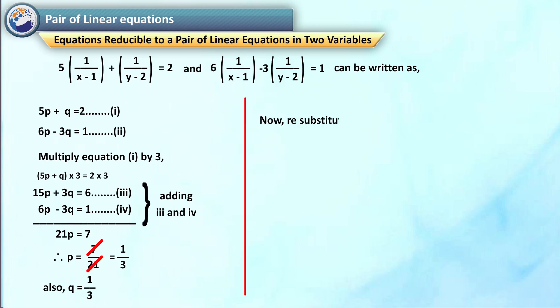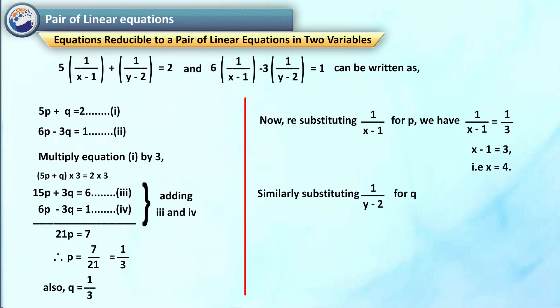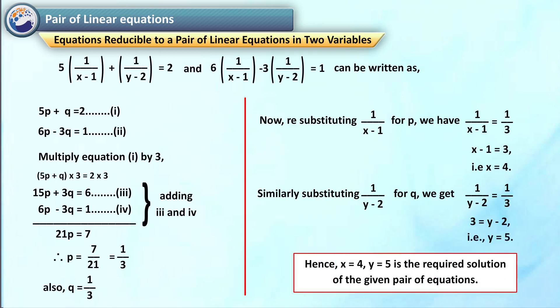Now resubstituting: 1 upon (x minus 1) is equal to 1 by 3, therefore x minus 1 is equal to 3, that is x is equal to 4. Similarly substituting 1 upon (y minus 2) for q: 1 upon (y minus 2) is equal to 1 by 3, that is y is equal to 5. Hence x is equal to 4 and y is equal to 5 is the required solution of the given pair of equations.